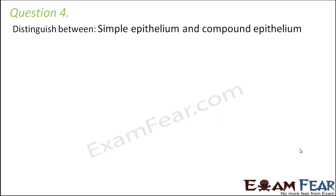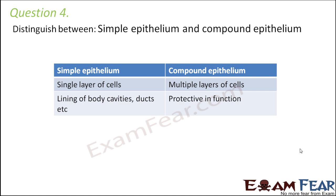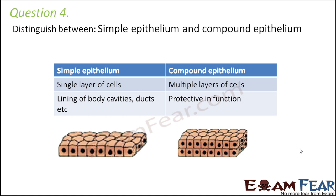Question four: distinguish between simple epithelium and compound epithelium. Simple epithelium is a single layer, generally used to line body cavities and ducts. Compound epithelium consists of multiple layers and is protective in function — the multiple layers provide a cushion-like feel that ensures protection.